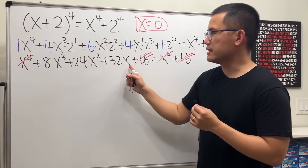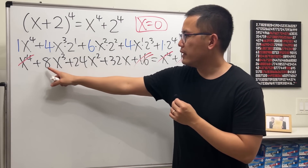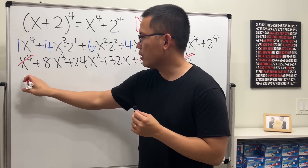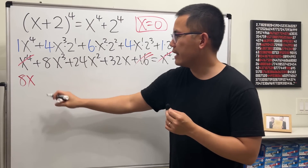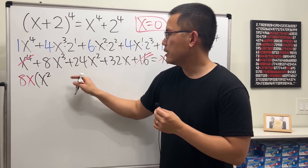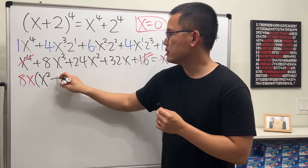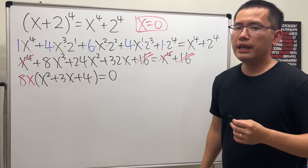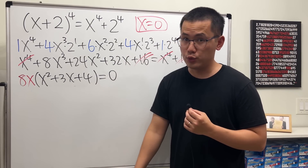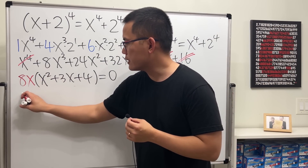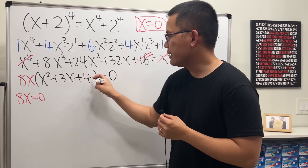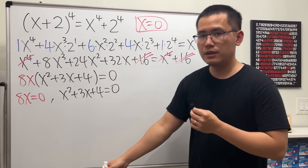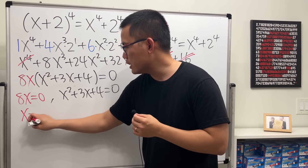Notice every term has an x, and 8, 24, and 32 are all multiples of 8, so we can factor out 8x. That gives us 8x times (x squared plus 3x plus 4) equals zero. Unfortunately this quadratic is not factorable with real numbers, so we set each factor to zero: 8x=0 and x²+3x+4=0.